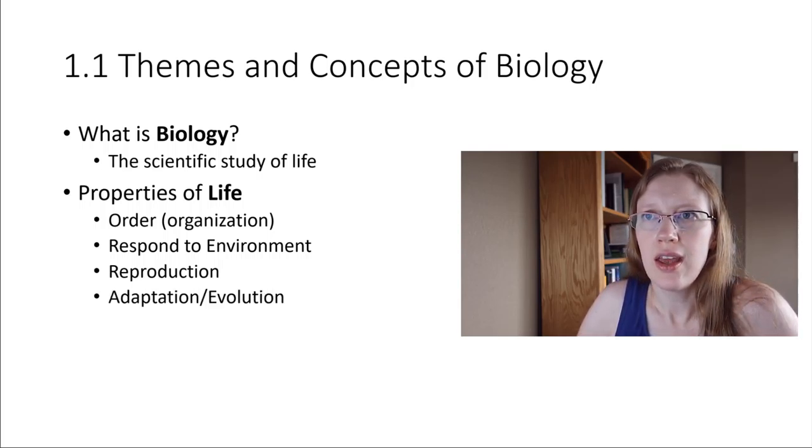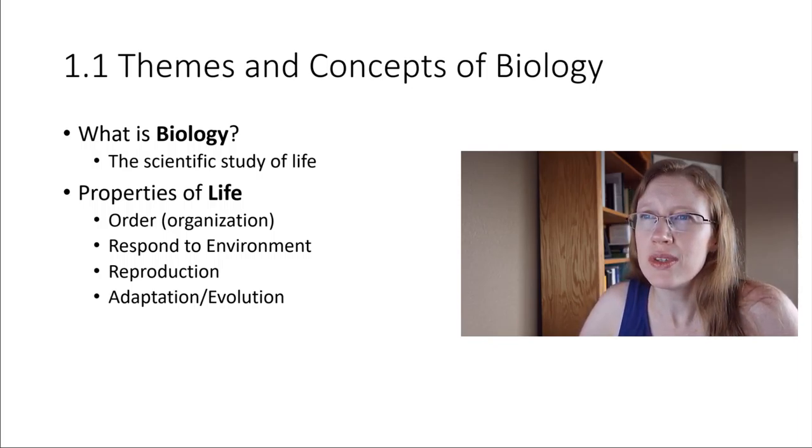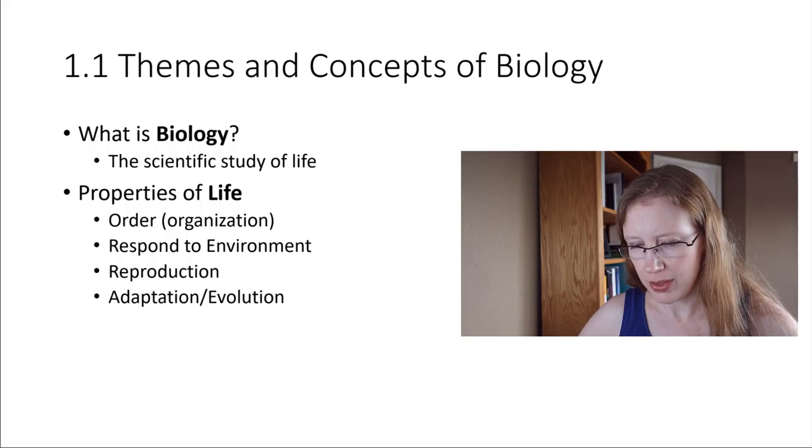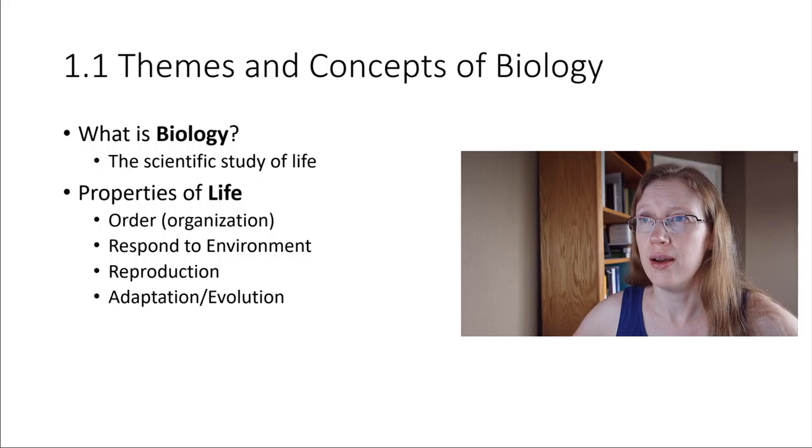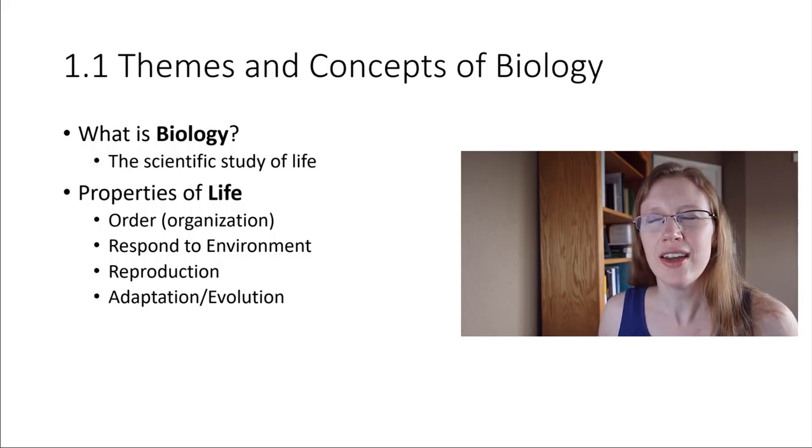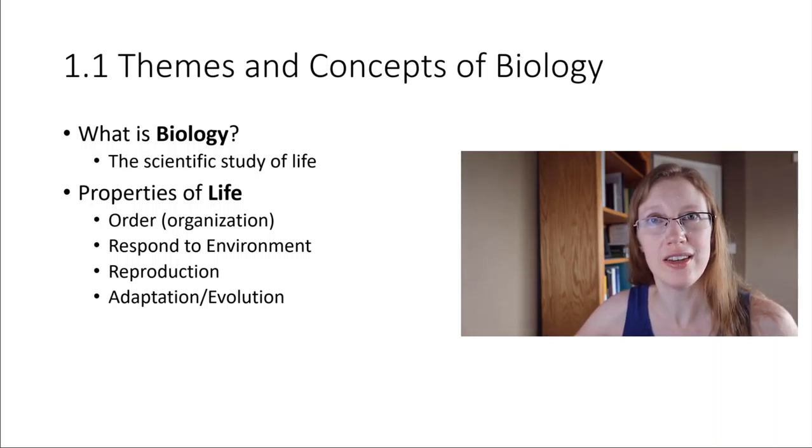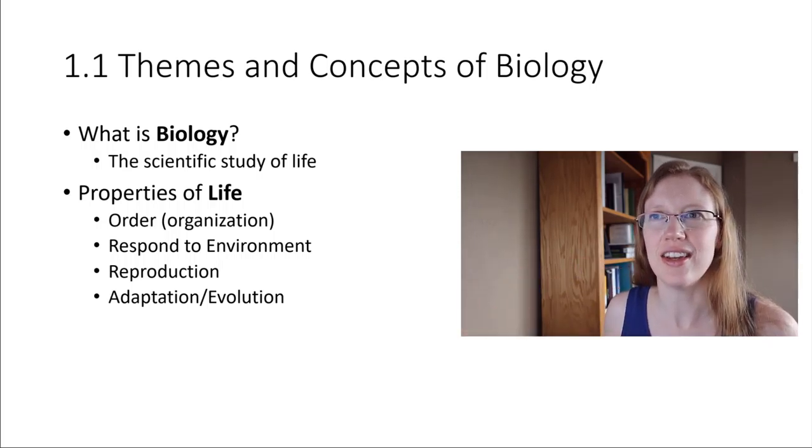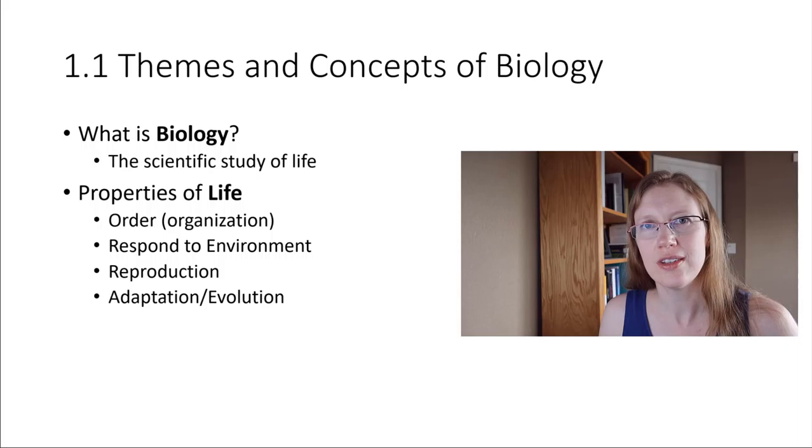Moving down the list - adaptation and evolution. I'm going to merge those two together. Organisms tend to be very suited to their environment. A good example is if you think of a hummingbird or even a moth, something that drinks nectar from a flower. The moth's tongue is really long - long enough to go down the flower that is in its environment. If that moth's tongue was too short, it wouldn't be able to get the nectar it needs. So there's an adaptation there. The moth is adapted to its environment.